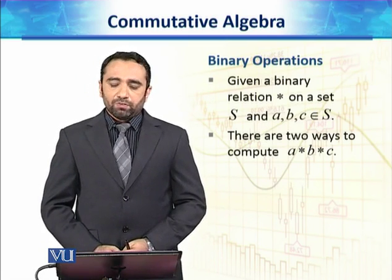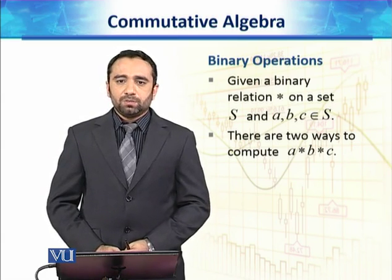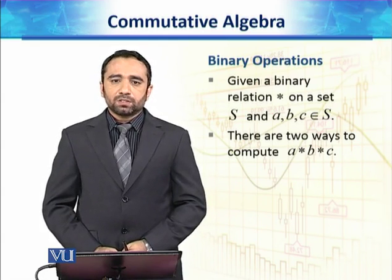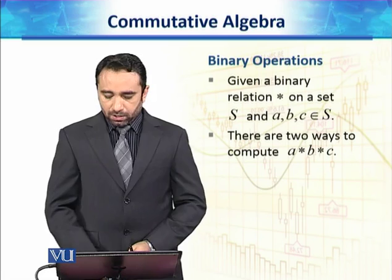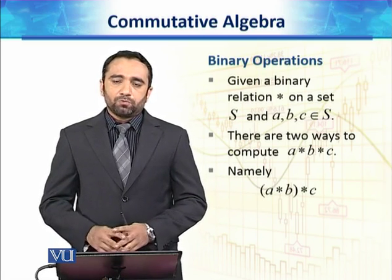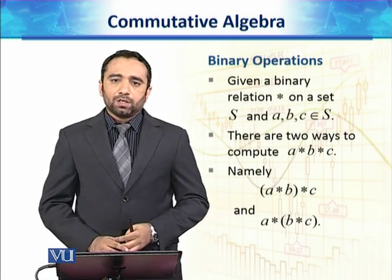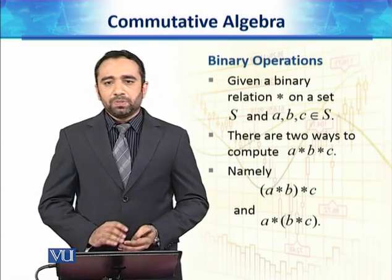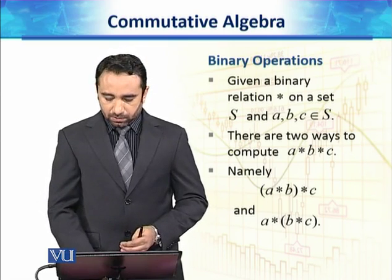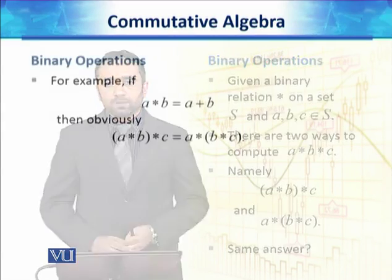Given a binary operation star on a set S and a, b, c belong to S, there are two ways to compute a star b star c. The first one is that we first compute (a star b) and then compute with c. And the other way is first we compute (b star c) and then compute its operation with a.